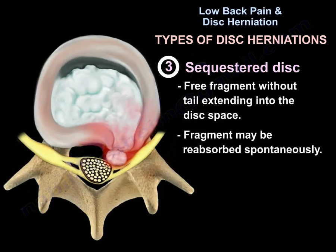The third type is called the sequestered disc — a free fragment without a tail extending into the disc space. The fragment may be reabsorbed spontaneously.